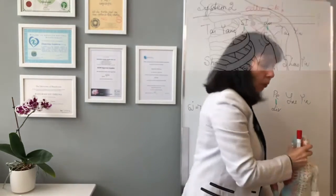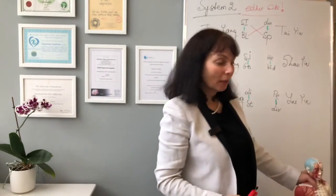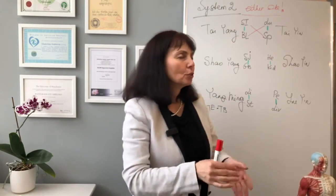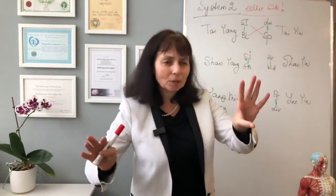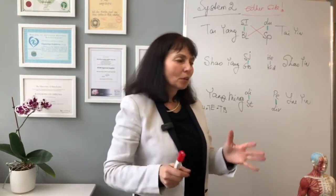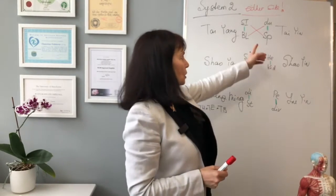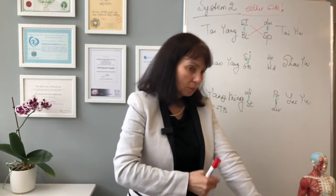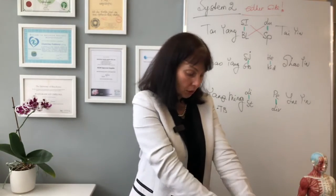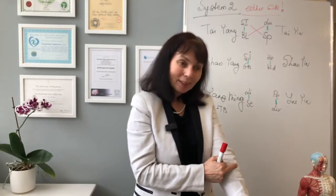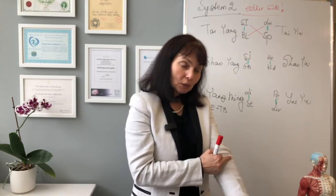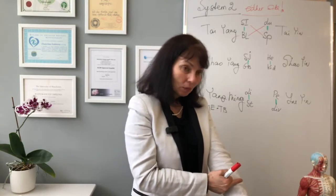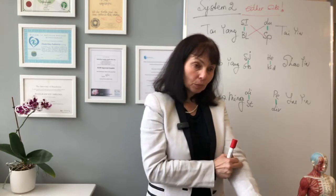Years ago, my mom had low back pain in the sacrum area. I came and said, 'Oh mom, I will treat you — no problem, you will feel so good.' According to system 2, I chose the Lung meridian and made a projection, projecting her trunk onto the arm. I said the sacrum will correspond to around Lung 6 or slightly above — all ashy points.